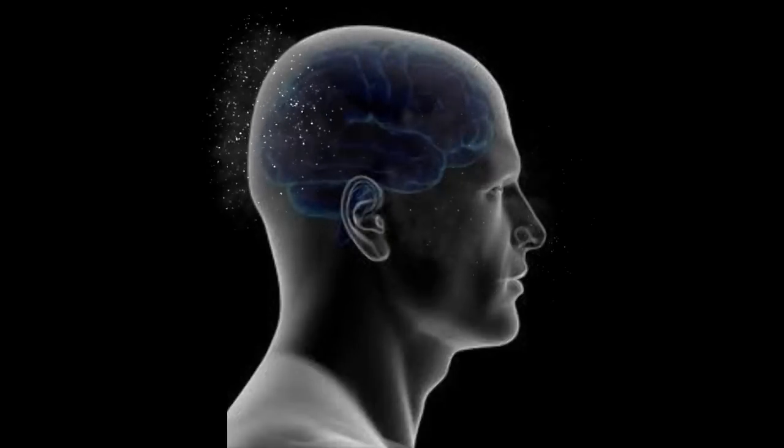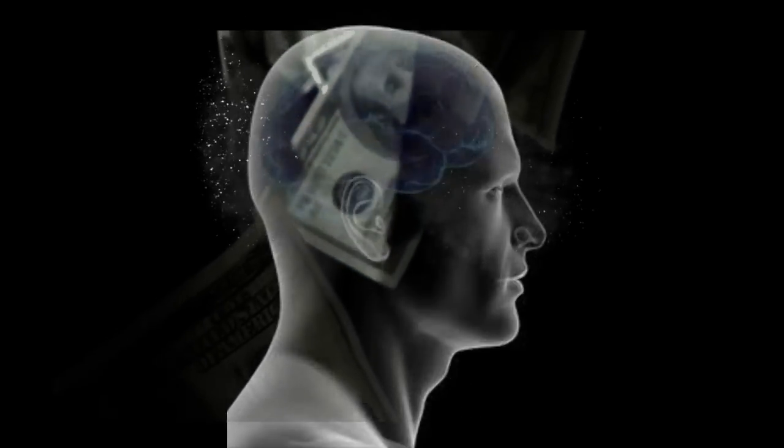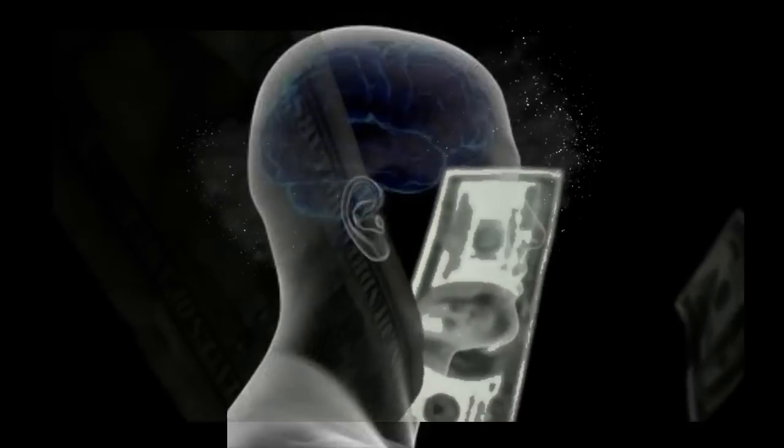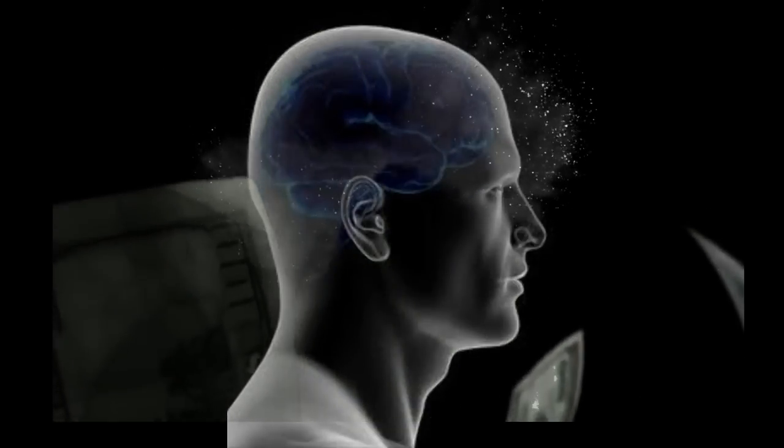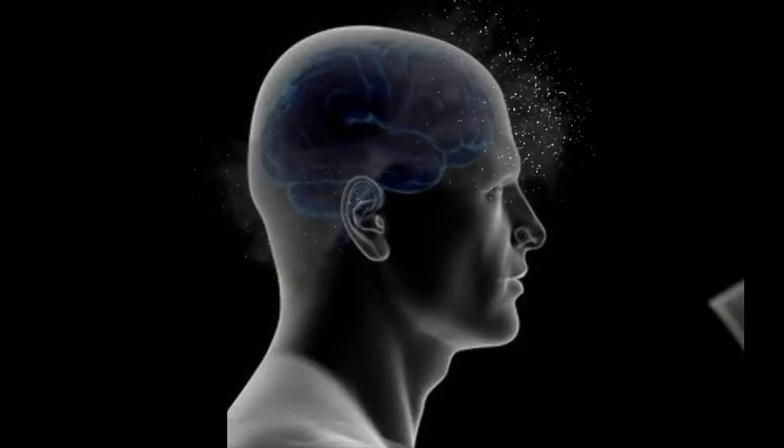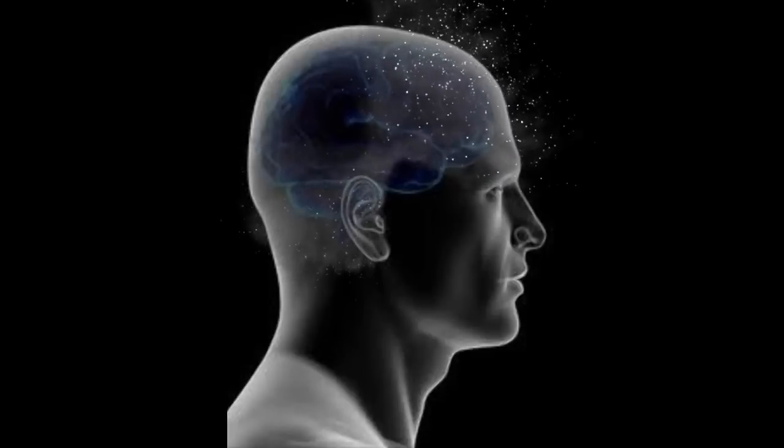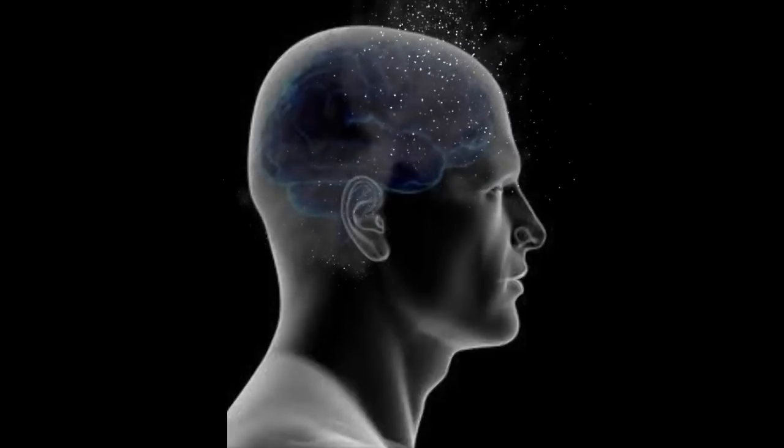So, let's say you harbor no contradictory beliefs to having a million dollars. You think money is great, it's absolutely possible for you to receive a million dollars in some way, and it doesn't even really feel like a big deal to you. How will the Universe deliver this manifestation? We've already concluded that it's not just going to drop out of the sky.